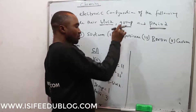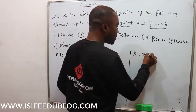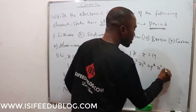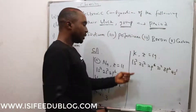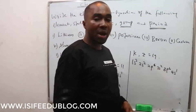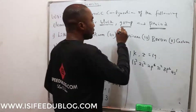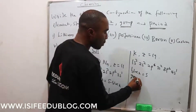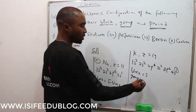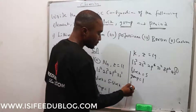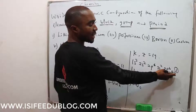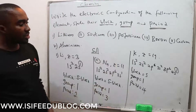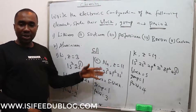Next is potassium. The atomic number of potassium is 19. The electronic configuration is: 1s² 2s² 2p⁶ 3s² 3p⁶ 4s¹. Adding up: 10 plus 8 plus 1 equals 19. The block of potassium is S-block. The group is determined by the number of electrons in the last S orbital, which is 1, so it belongs to Group 1. The period is the number at the back of the last S orbital, which is 4, so the period is 4. That is how to find the group, block, and period for S-block elements.